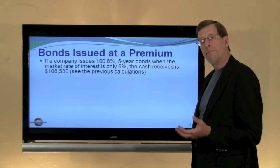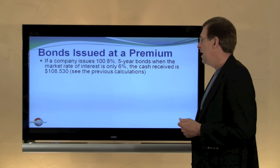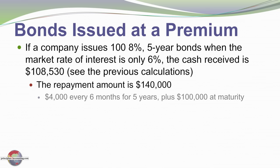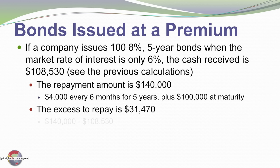We received a premium because these were 8% bonds when the market rate of interest was only 6% — they're superior in that sense. The calculations were shown in the previous module and are in the textbook as well. We're going to repay a total of $140,000: that's $4,000 every six months for five years and $100,000 at maturity, meaning we repay $31,470 more than we borrowed.